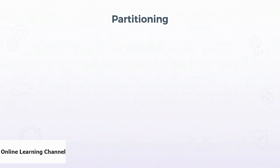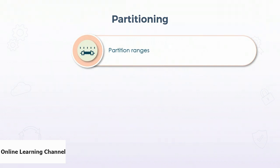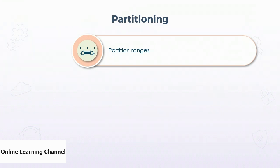Data access performance can be enhanced through efficient data partitioning. Partitioning is performed automatically based on the name of the blobs. The partitioning scheme in Blob Storage uses a range-based approach to load-balance data and limit hot spots, as well as to scale the data without reducing performance. The partition key is based on the full blob name, which is constructed from the account name, the container name, and the blob name.